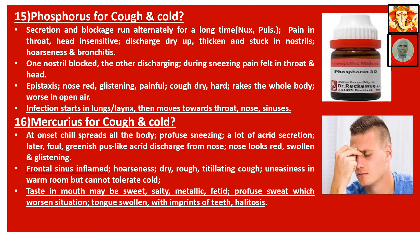Phosphorus for cough and cold: secretion and blockage run alternately for a long time — we get this symptom in Pulsatilla also. Pain in throat, head insensitive. Discharge dries up, thickens and gets stuck in the nostrils. Hoarseness, bronchitis. One nostril blocked, the other discharging. During sneezing, pain felt in throat and head. Epistaxis — nose red and glistening, painful. Cough dry and hard, wracks the whole body. Worse in open air. Infection starts in the lungs, larynx, then moves towards the throat, nose, sinuses — that is the reverse direction, as described earlier in contrast to Bryonia.